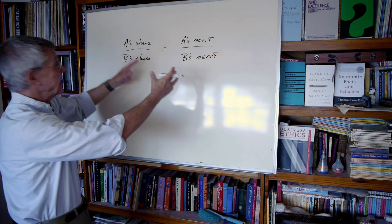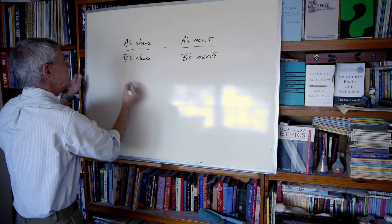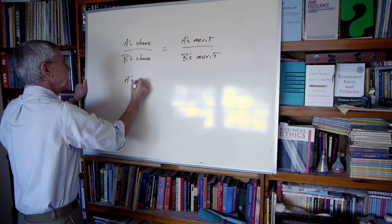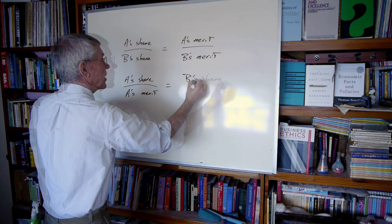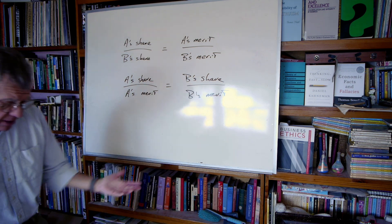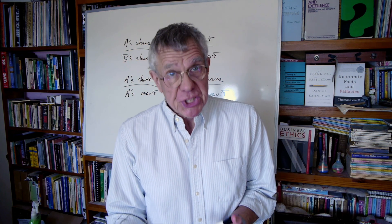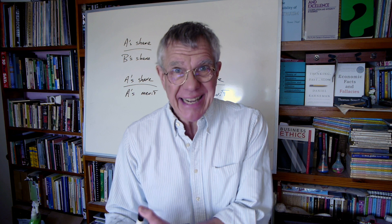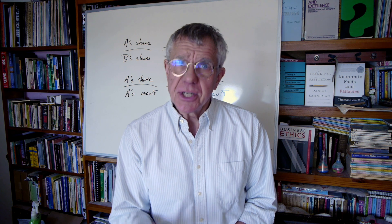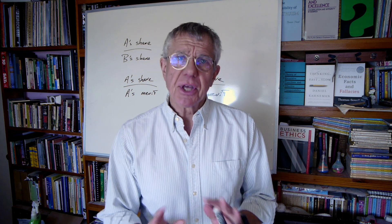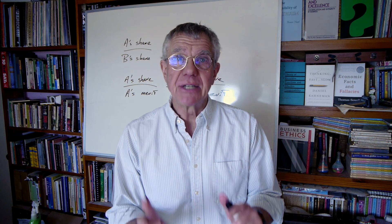If we think of merit as what you deserve, this does seem like a platitude. A's share compared to B's should be a matter of what A deserves compared to B. Everybody agrees that things should be distributed according to merit, but not everybody measures merit in the same way. People have different approaches to it.